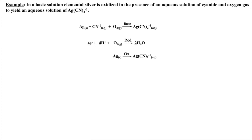Now let's repeat these same steps to the oxidation half reaction. The element being oxidized — silver — is already balanced. Now let's balance the other atoms by adding two cyanides to the reactant side. There are no oxygen atoms, so I do not have to add water or protons. At this point, we calculate the overall charge on both sides of the oxidation reaction. The only way to make these charges balanced is to add one electron to the product side.